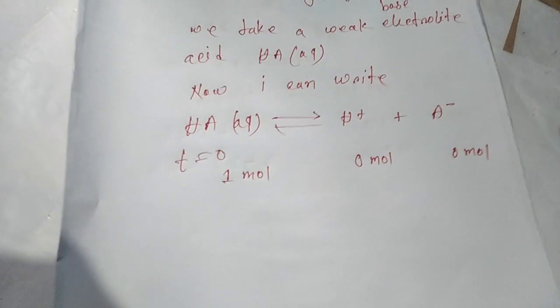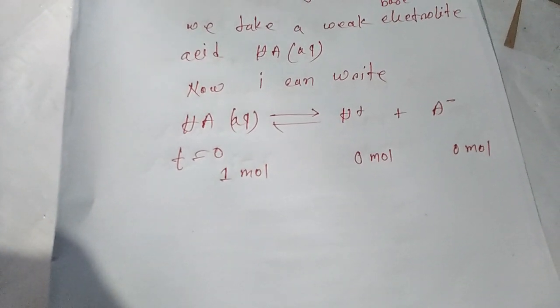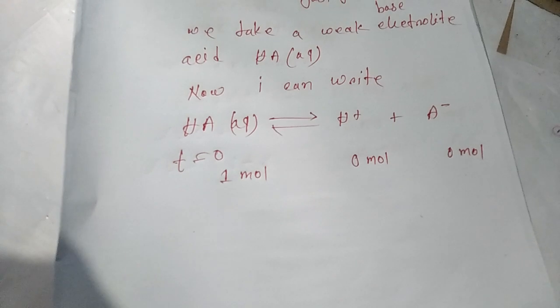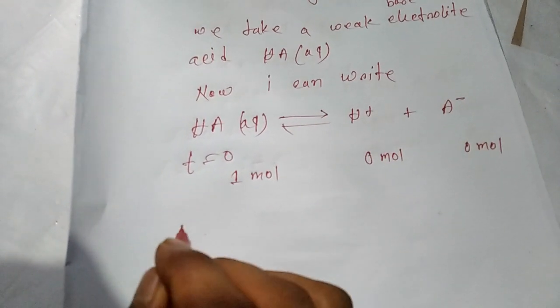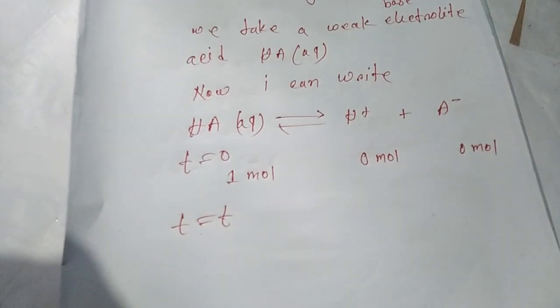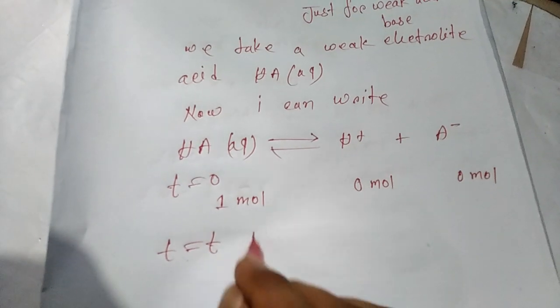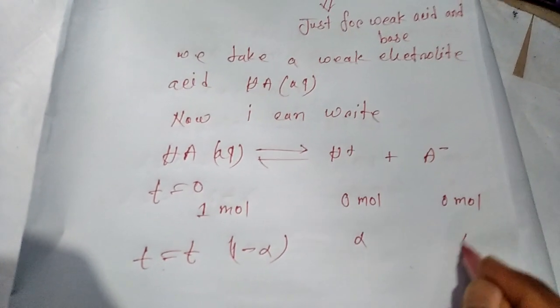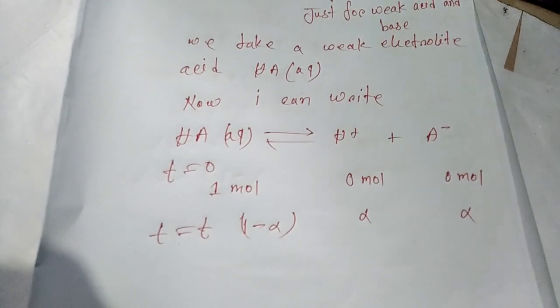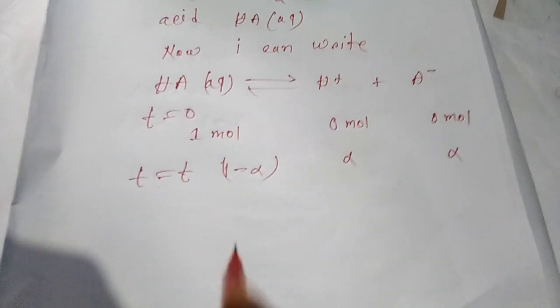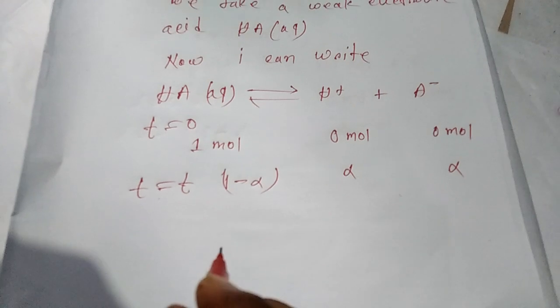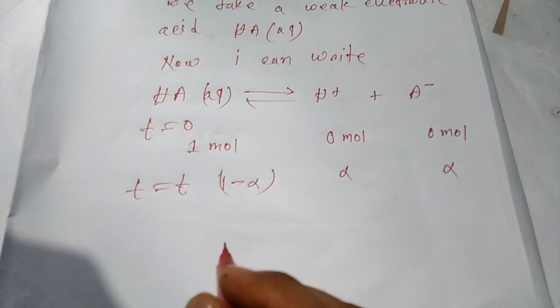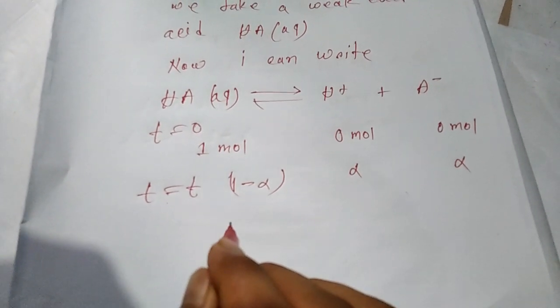I consider the reaction is at equilibrium. At t equals t, we have 1 minus alpha, alpha, alpha. If I transform to concentration: 1 minus alpha...